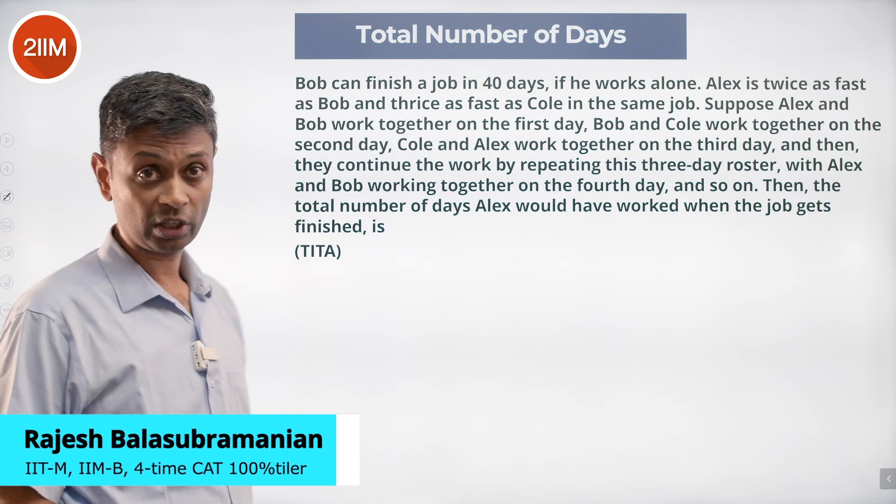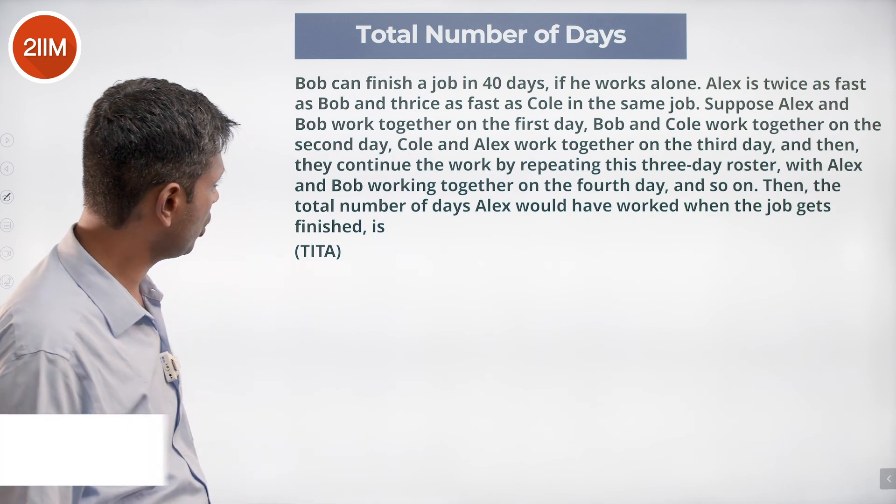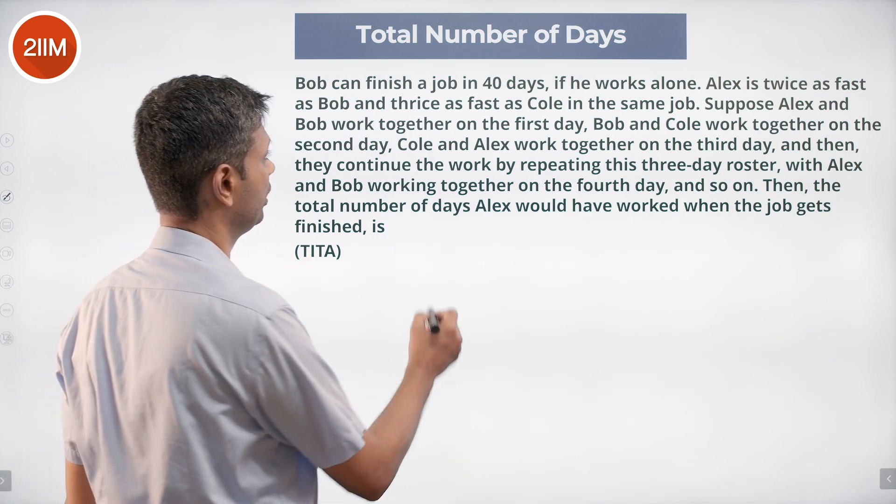Bob can finish a job in 40 days if he works alone. Alex is twice as fast as Bob and thrice as fast as Cole in the same job.